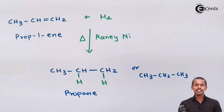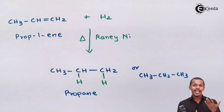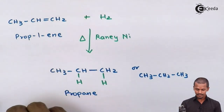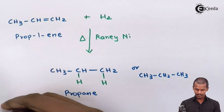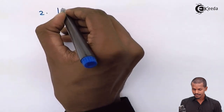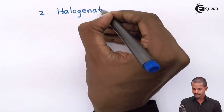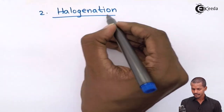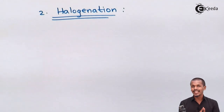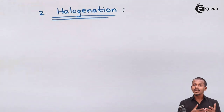Now let us discuss the next chemical property of alkenes — the halogenation process. Halogenation involves the introduction of a halogen molecule (X2) into an alkene.